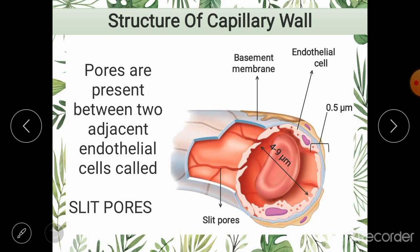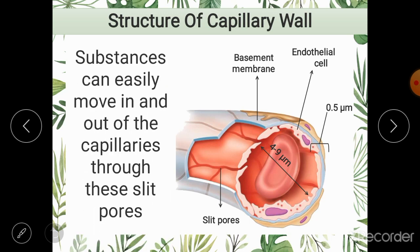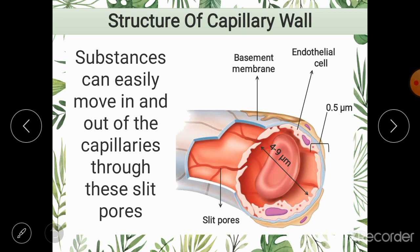Between adjacent endothelial cells there are spaces known as slit pores. Between one endothelial cell and the next you can appreciate these slits or pores. Slit pores are present to allow substances to move easily from the capillary to the tissues. They are passageways where two adjacent endothelial cells meet and they provide easy passage for substances to move from the capillary into the tissues.